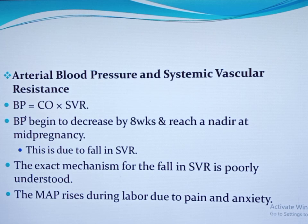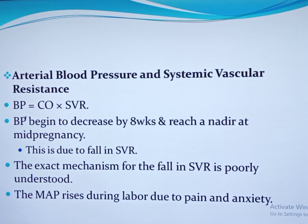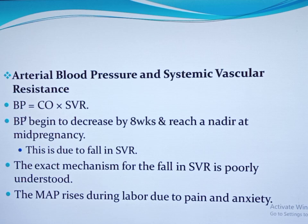Arterial blood pressure and systemic vascular resistance. Blood pressure is a product of cardiac output and systemic vascular resistance. Even though cardiac output is significantly increased during pregnancy, maternal blood pressure decreases early in pregnancy, starting from eight weeks of gestation, reaching a nadir at mid-pregnancy. Starting from mid-pregnancy, it gradually increases, reaching the pre-pregnancy level at term. This decrease is mainly because of the decrease in systemic vascular resistance, which begins to fall from eight weeks of gestation and reaches a nadir at mid-pregnancy. At term, it is 21 percent lower than the pre-pregnancy value.